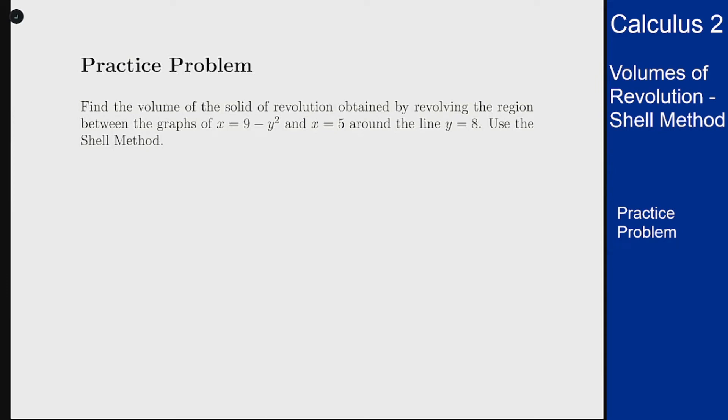In this example we want to find the volume of the solid of revolution obtained by revolving the region between the graphs of x equals 9 minus y squared and x equals 5 around the line y equals 8 using the shell method.